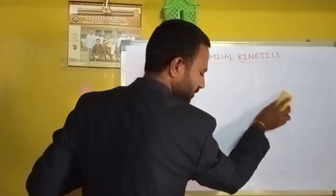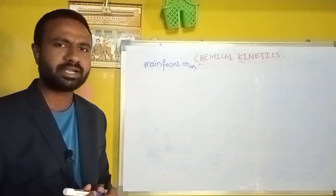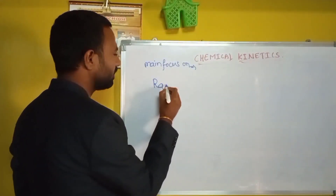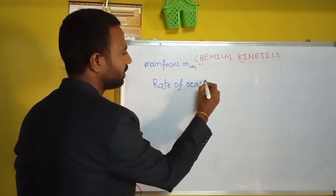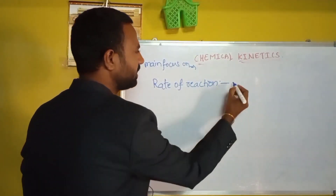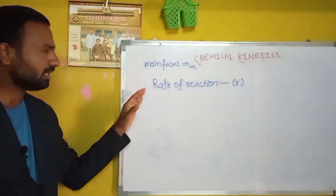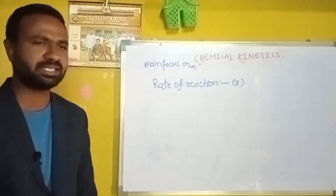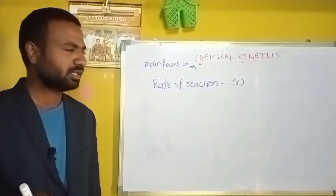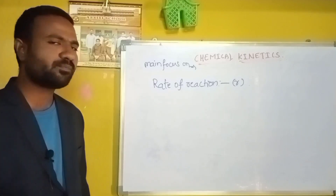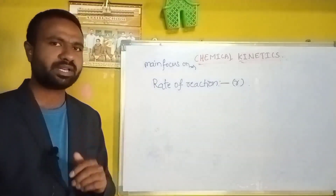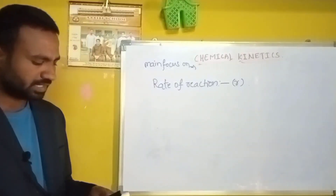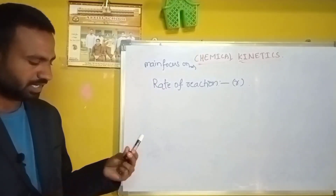The first basic terminology we need to know is rate of reaction, indicated by small r. The rate of reaction deals with the speed of the reaction. The definition is: rate of reaction is the decrease in concentration of reactant, or the increase in concentration of product, with respect to time. In simple terms, it is the change in concentration with respective time.